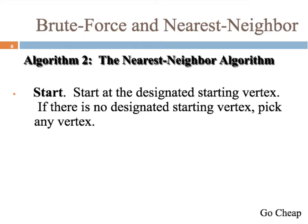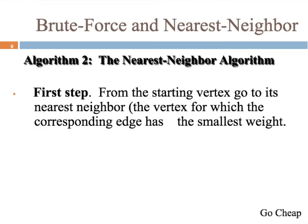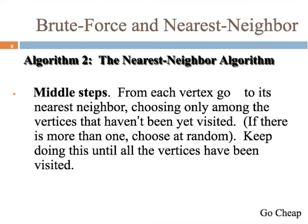Algorithm two is the nearest neighbor algorithm — the go-cheap method. To start, begin at a designated vertex; if there is none, just pick anywhere. From the starting vertex, go to its nearest neighbor — the vertex with the smallest weight, whether that's cost, distance, or speed. For all middle steps, continue choosing the nearest unvisited neighbor.